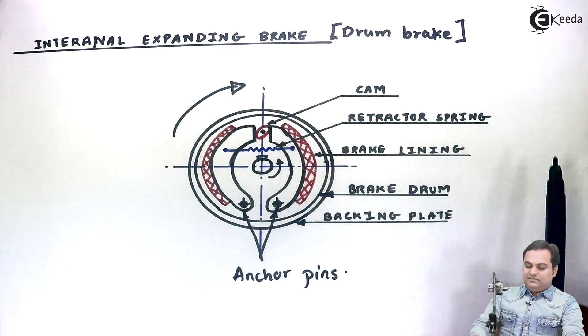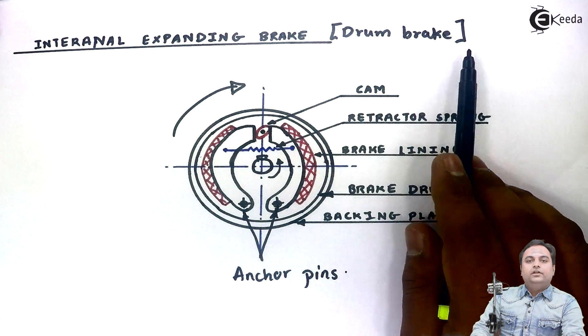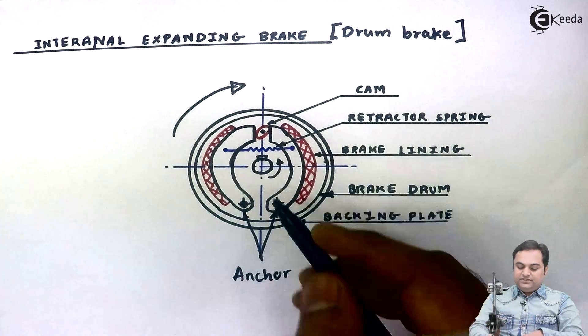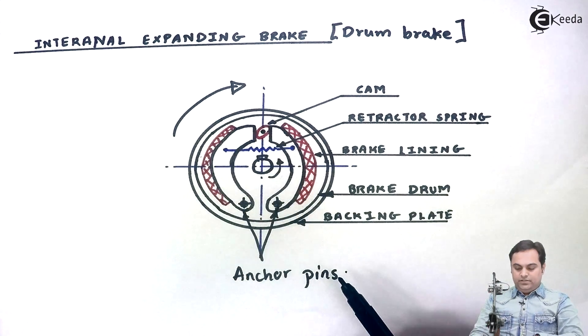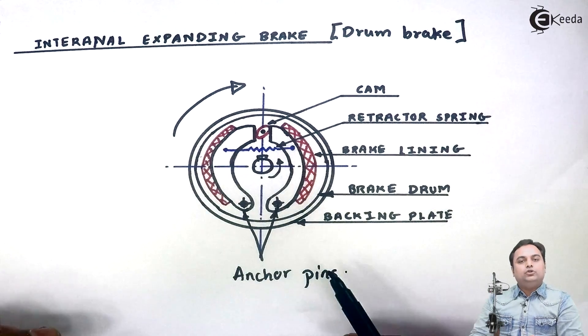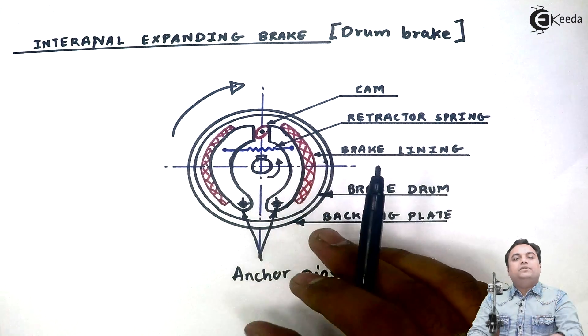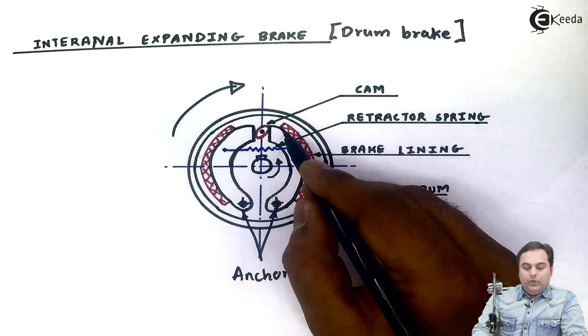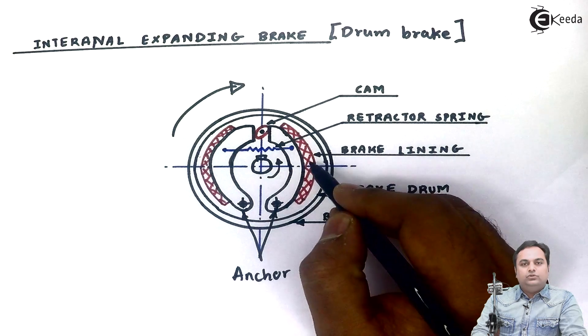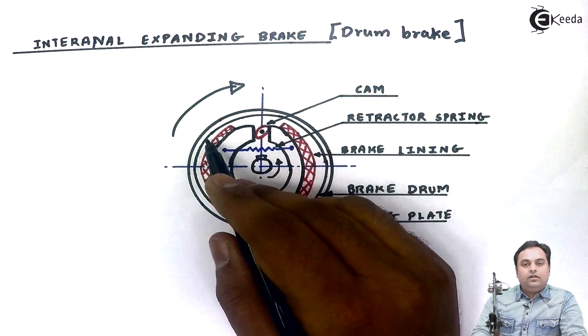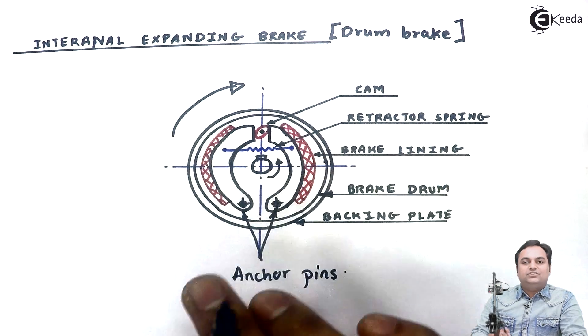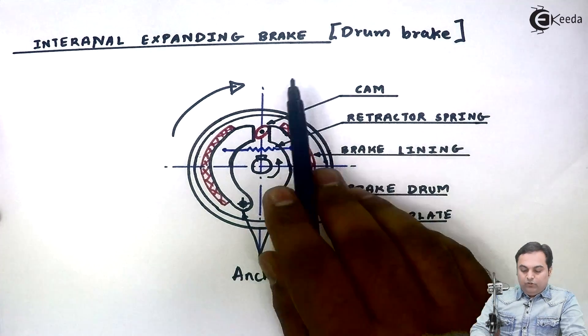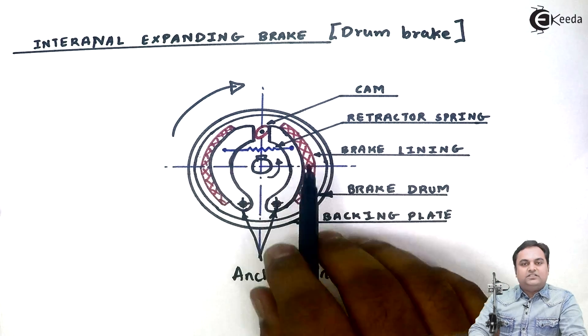Such kind of brakes, as they are called as drum brake, the advantage of drum brake is that it is enclosed. This construction which we are seeing will be visible to us once we open the brake drum. Otherwise it is completely protected. Next, when the brake lining gets worn out, in that case, the braking for such kind of brakes, it is very much effective as compared to the other brakes. That is an advantage of internal expanding brake.